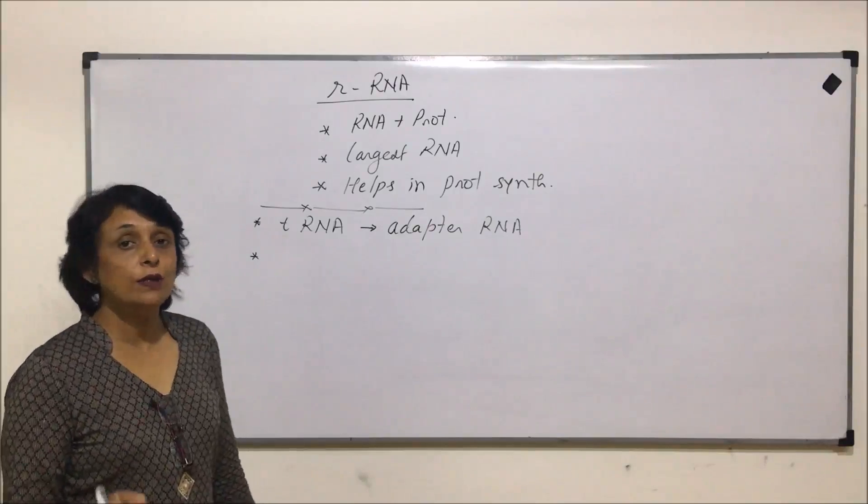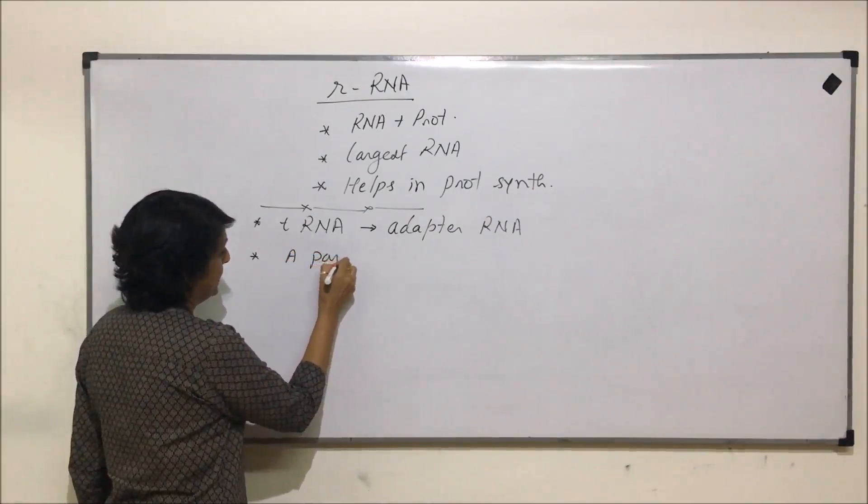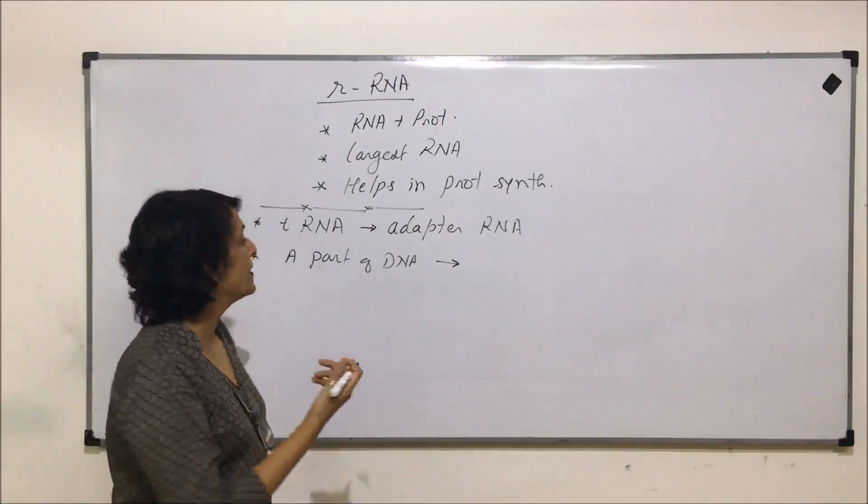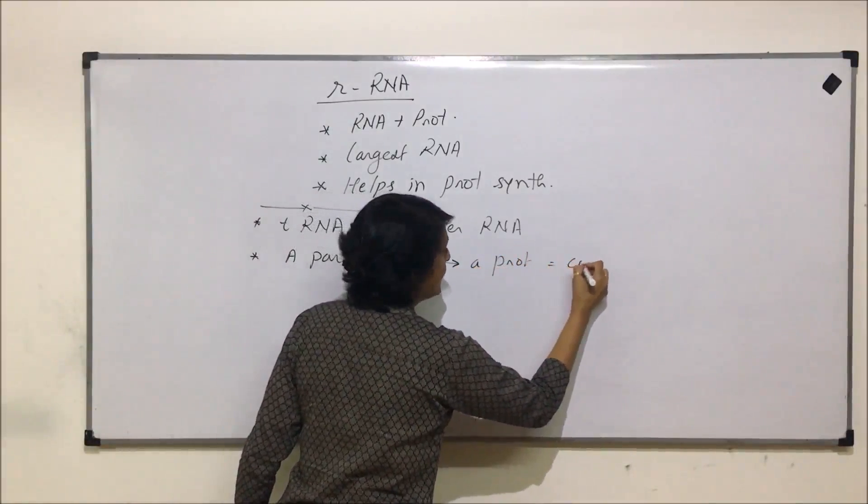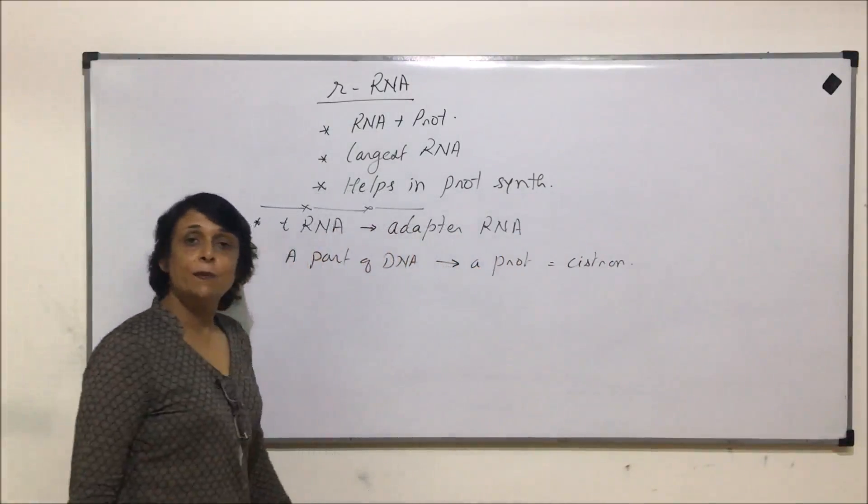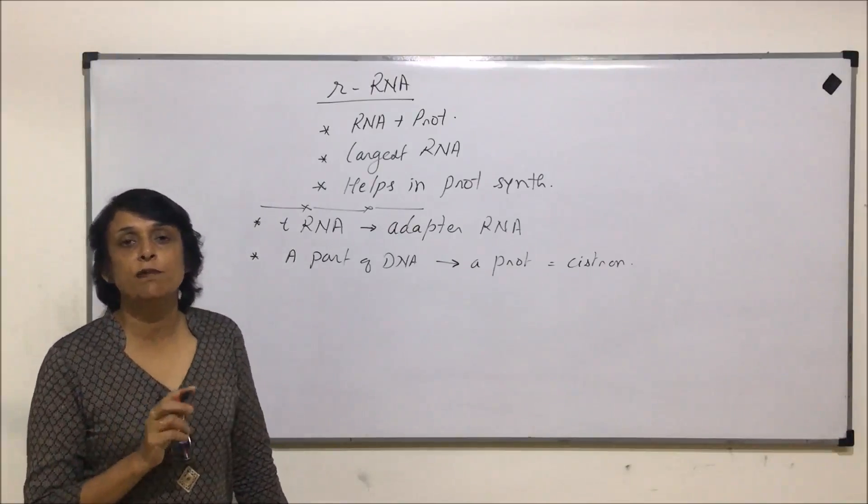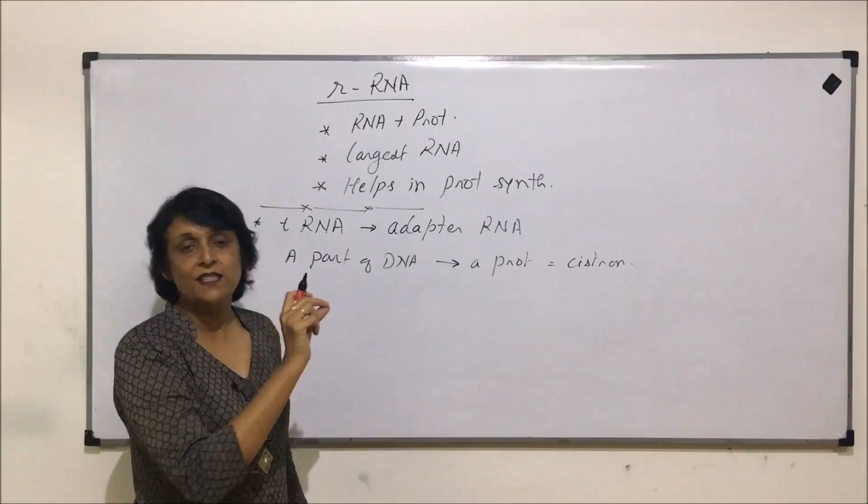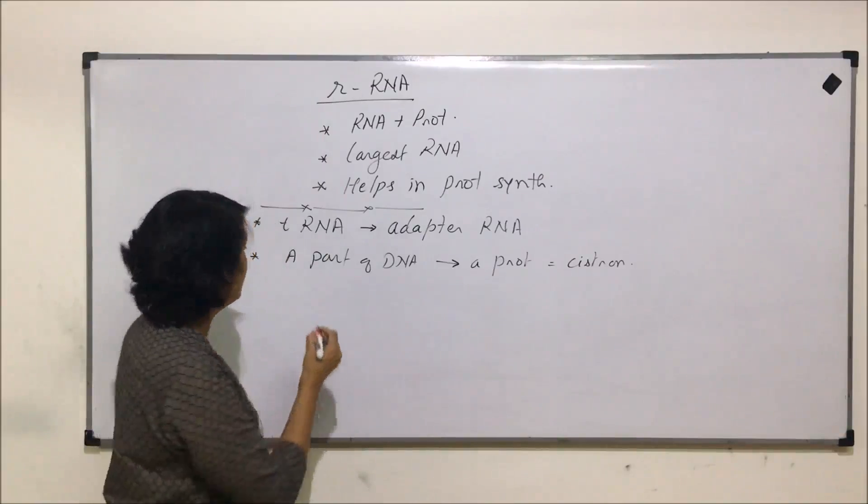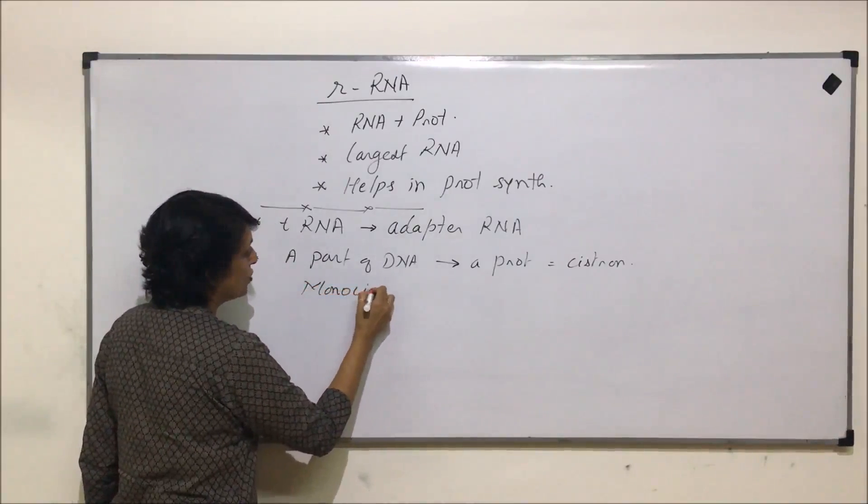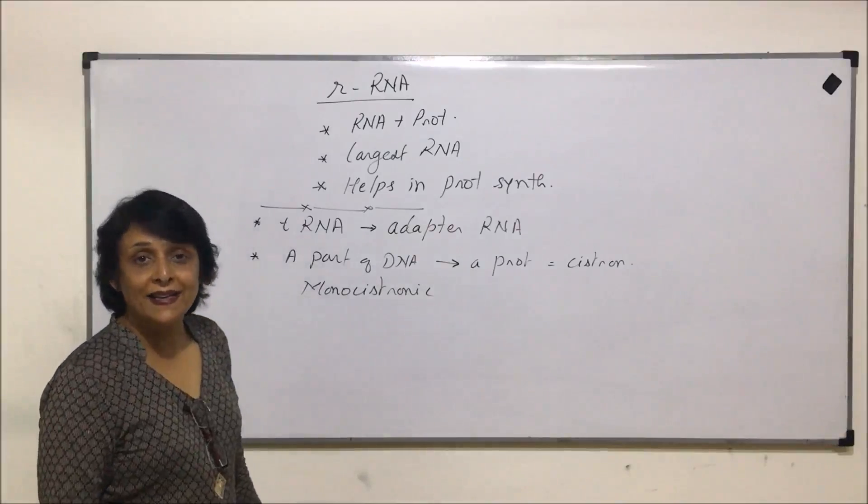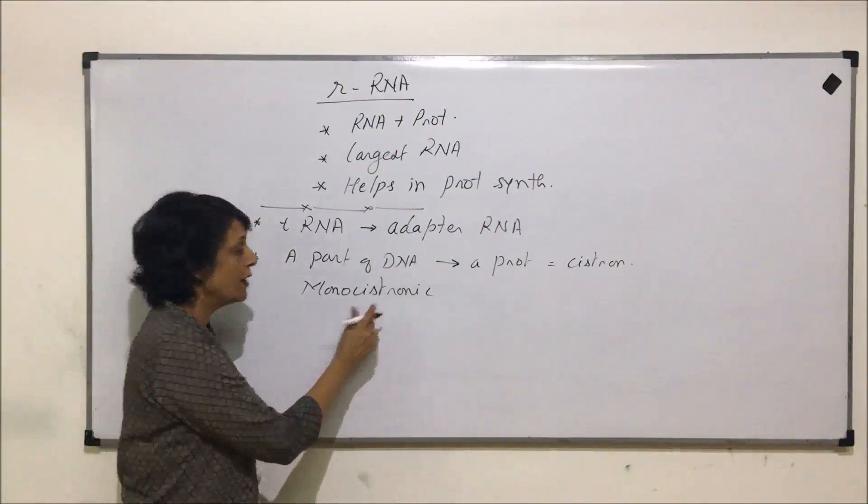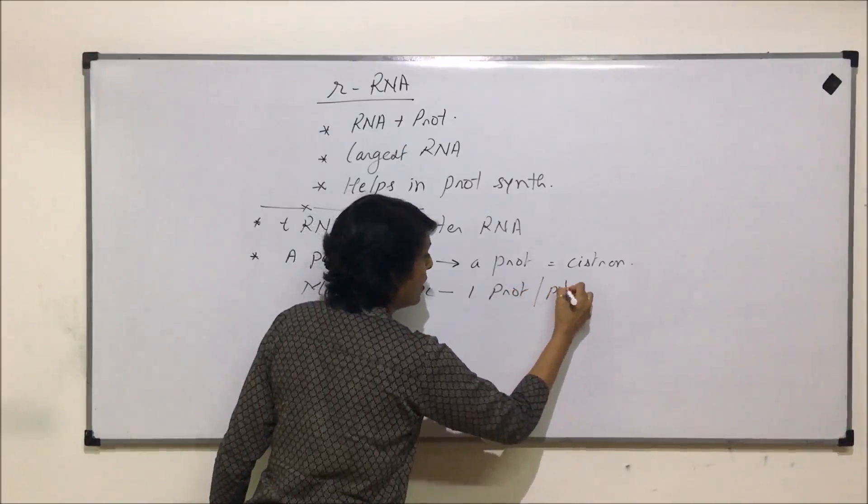One more thing is about DNA. A part of DNA which synthesizes or a gene which synthesizes a protein is known as a cistron. That part which is responsible for synthesizing one polypeptide or a protein is called a cistron. If one segment of RNA which has that code synthesizing one protein, we call it monocystronic. This is seen in case of mRNA. A segment of mRNA or one mRNA which is synthesizing only one protein is called monocystronic.